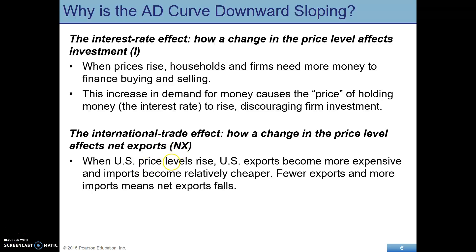The next component is net exports. We'll come back to G — government spending — when we look at fiscal policy. Net exports is just exports minus imports, and we're thinking about aggregate demand. On the y-axis we have the price level, so what happens when the price level changes? When the price level rises in the U.S. relative to other countries, that makes U.S. exports relatively more expensive.